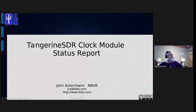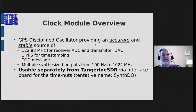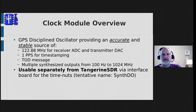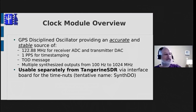As an overview, the idea of the clock module is to provide an accurate and stable source of the 122.88 megahertz signal that clocks the analog-to-digital converter and digital-analog converter in the radio. We also need a precise one pulse-per-second signal for time stamping, and a time-of-day message also for time stamping. We would very much like to have multiple frequency outputs available.